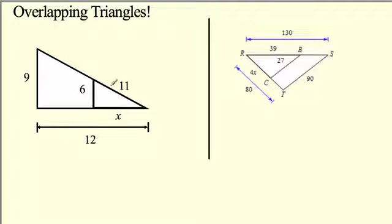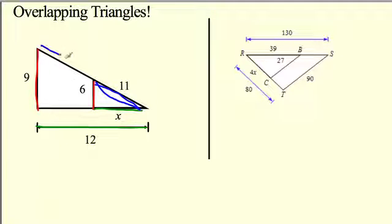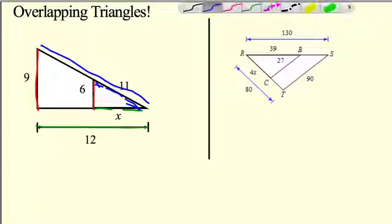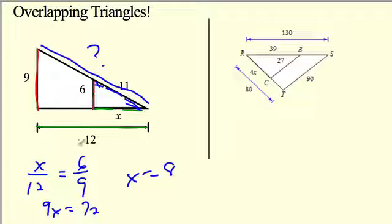Now overlapping triangles — don't freak out. The small triangle is inside the big triangle. This side matches the whole big side down here; this side matches a side over here; the blue side matches the whole other side. Go small to big. Set up: x is to 12 as 6 is to 9. Cross multiply and solve — x equals 8.